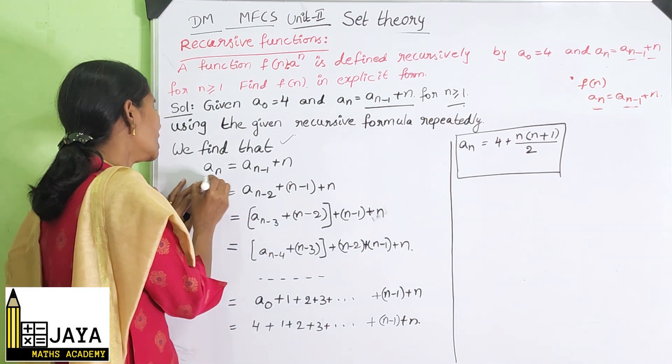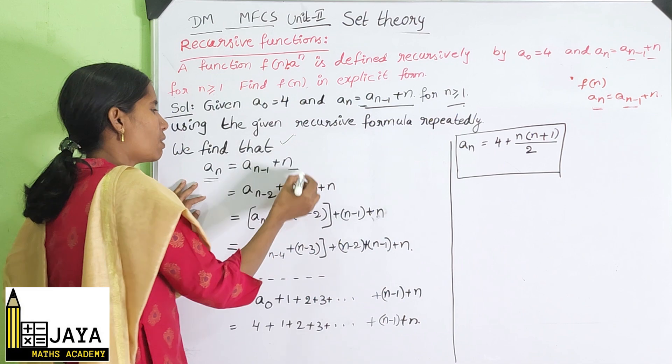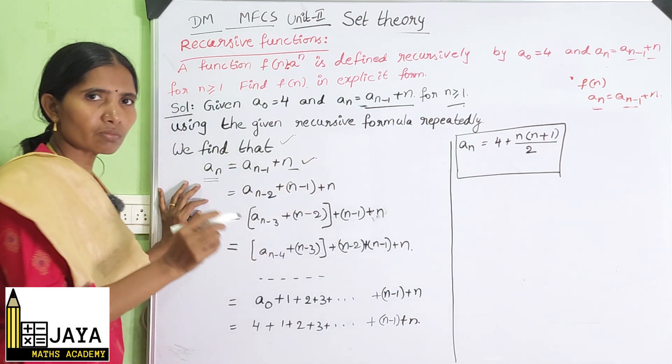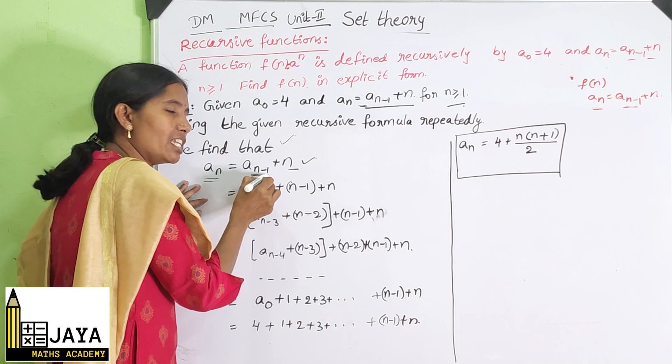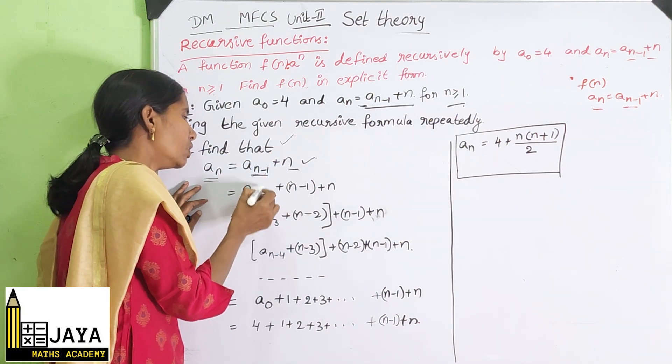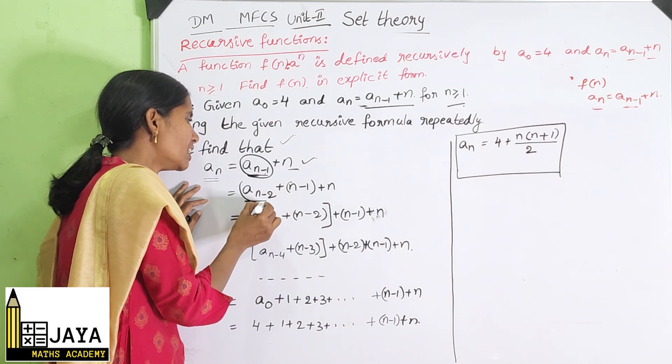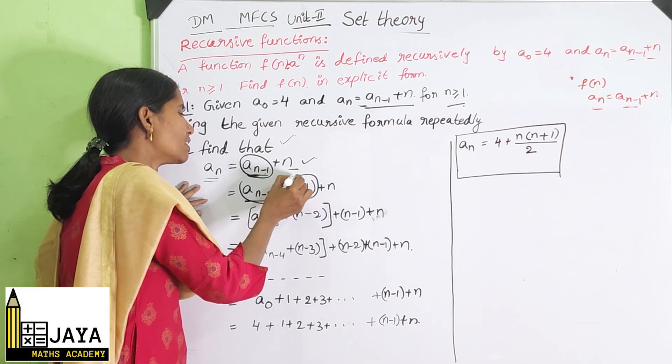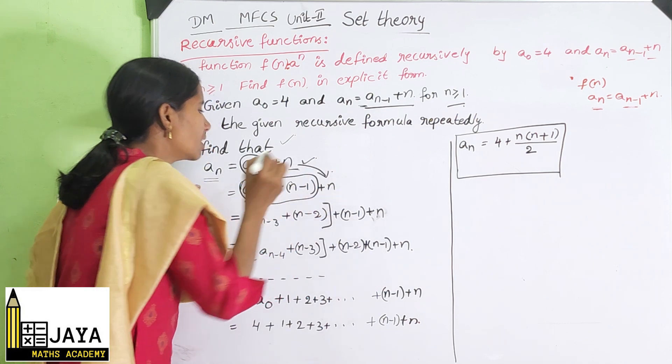A(n) = A(n-1) + n, so given formula. So for this n, substitute n-1. A(n-1) is A(n-2) + (n-1). Substitute A(n-2) + (n-1), plus n is as it is.